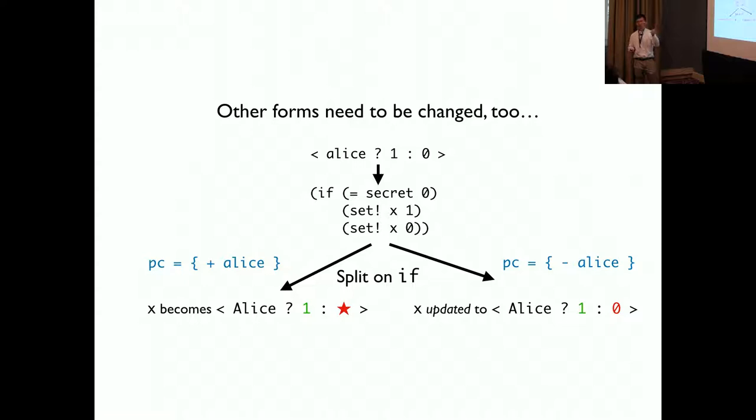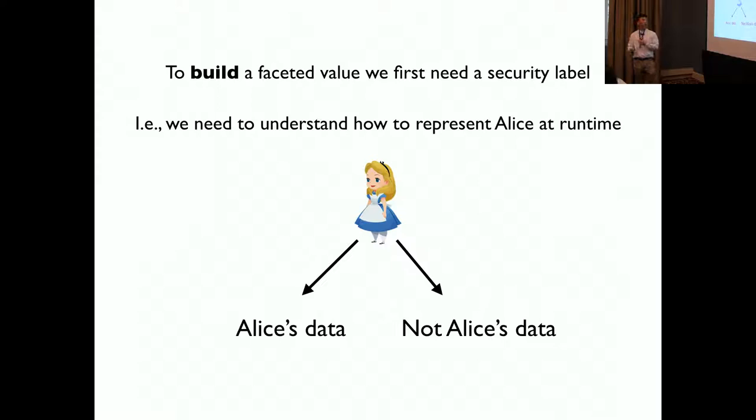Then we evaluate the right branch. And x is updated to Alice 1, 0. And the star disappears because 0 takes place.